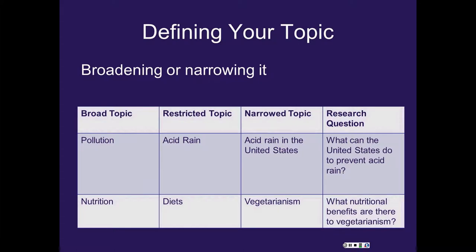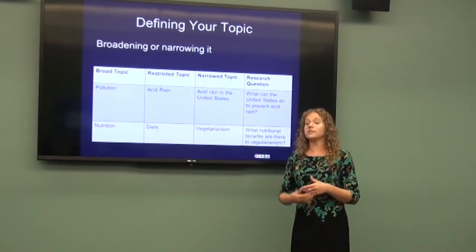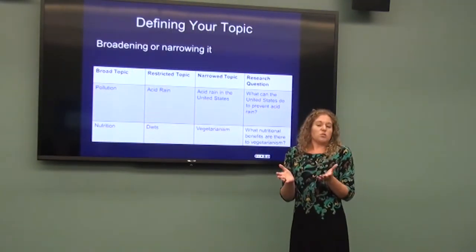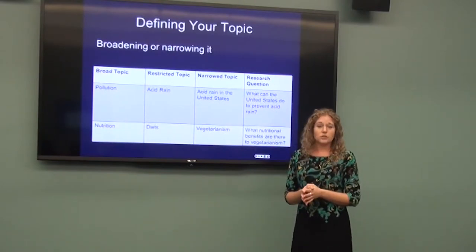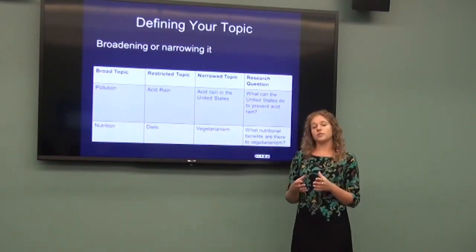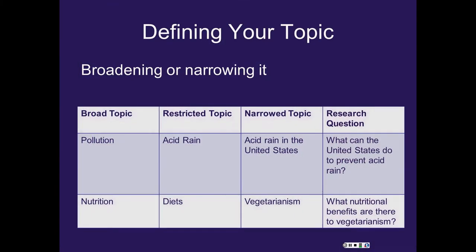To get started, we'll work on defining your topic. I can't tell you how often we have someone coming into the library that says, I want to do a paper on diabetes. Can you even estimate how many articles are going to be published about diabetes? That kind of topic is too broad to effectively conduct library research. These examples are the same — pollution is too broad. There will be too many results for you to sift through.